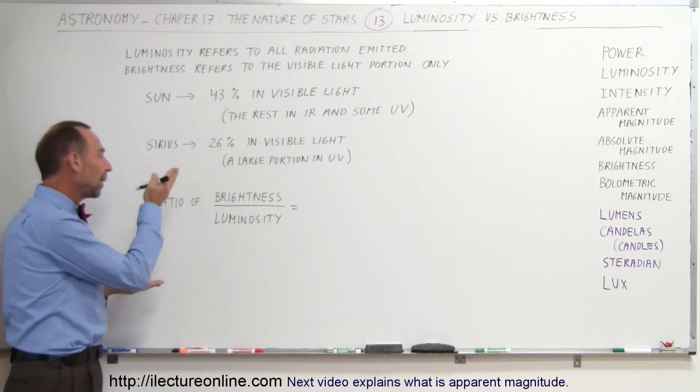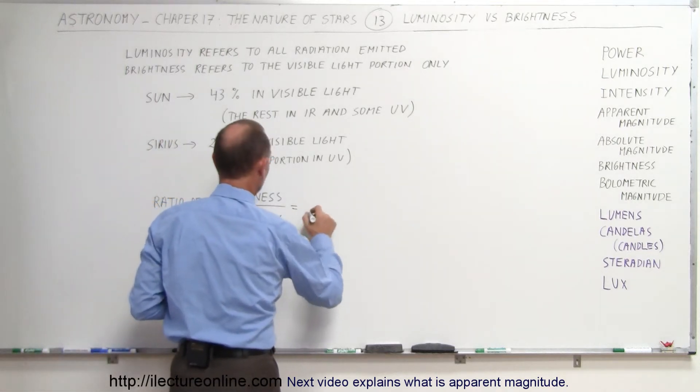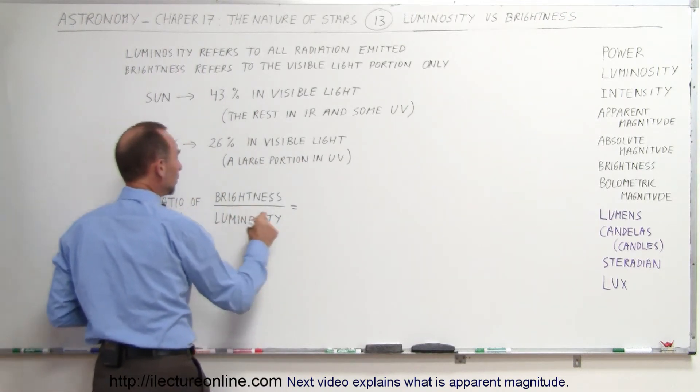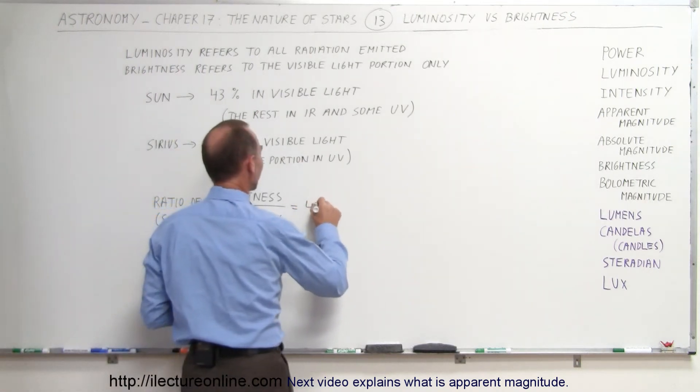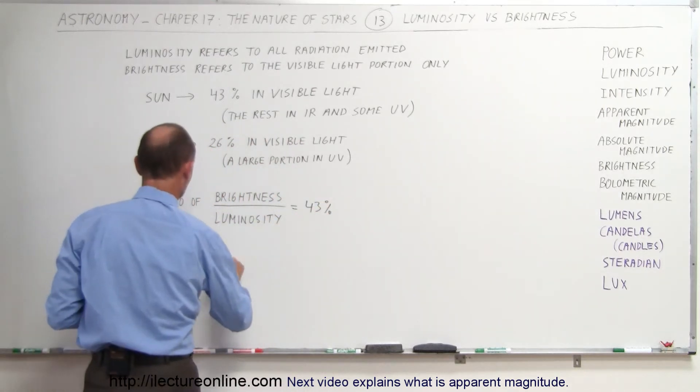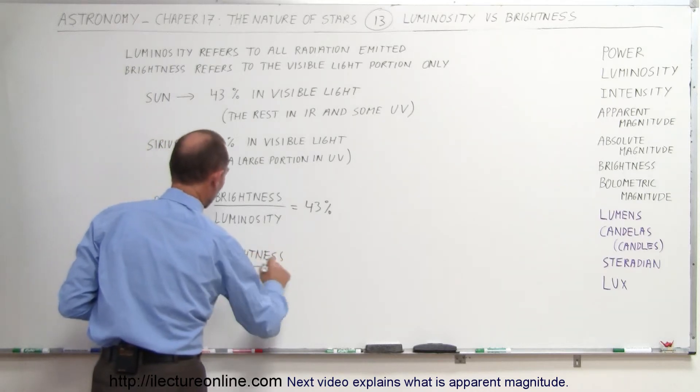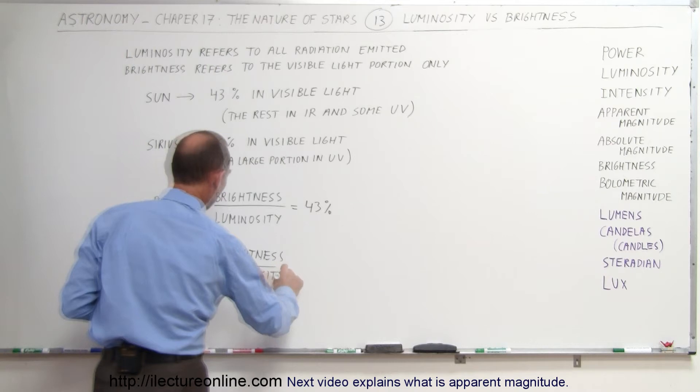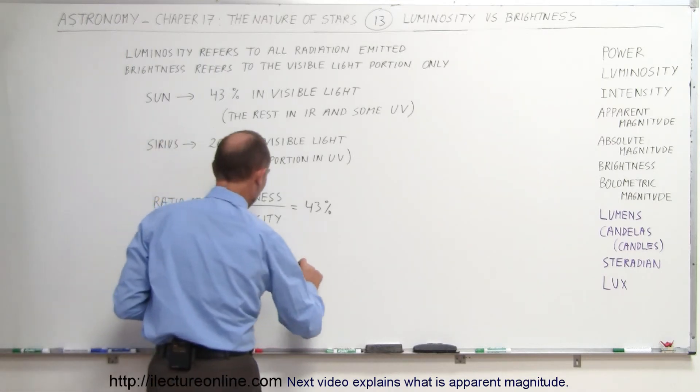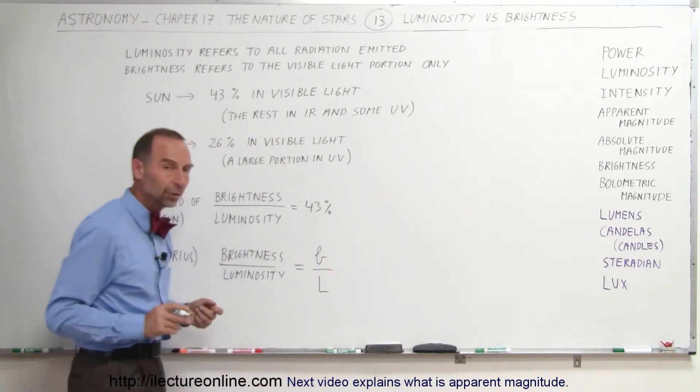So the ratio then of the brightness to the luminosity for the Sun. In this case, for the Sun, that would be equal to 43%. And for Sirius, if we do the ratio for Sirius, the brightness ratio to the luminosity in the case of Sirius. Now the letters that we use to indicate that would simply be b, small b for brightness, and capital L for luminosity.